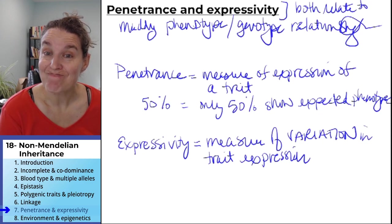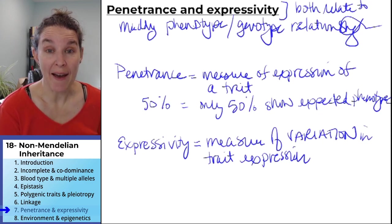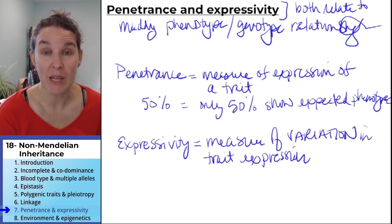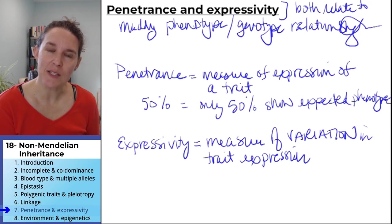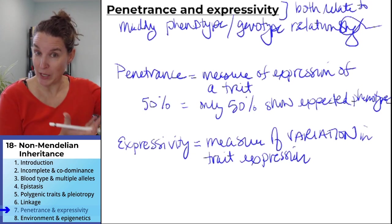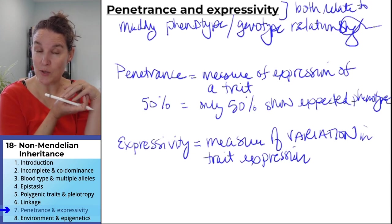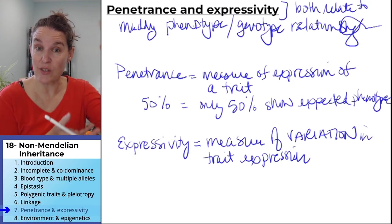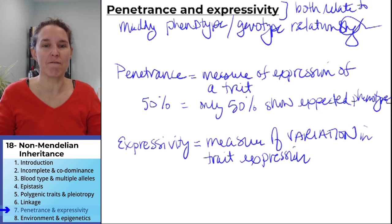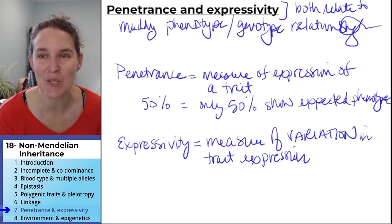Expressivity. You have a genotype that causes a phenotype, but sometimes the phenotype is really big and sometimes the phenotype is really small. It's still the same phenotype, but there is great variation in expression.